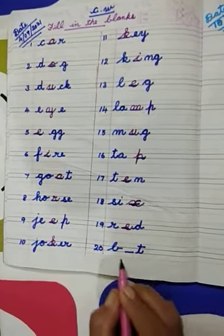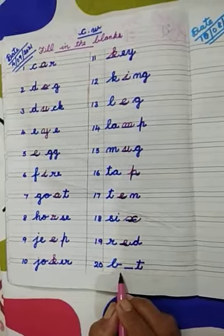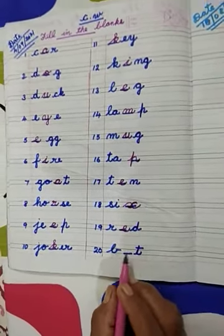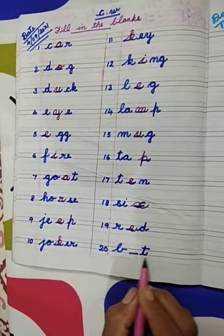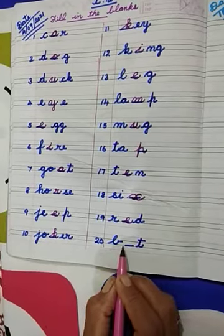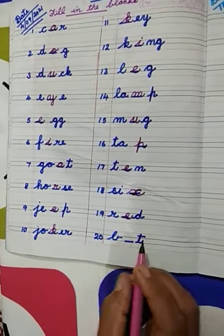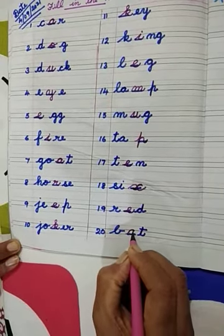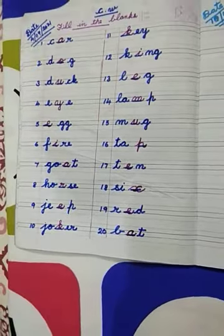B-T. You know which weight is this? Very good. Bat. Spelling of bat: B-A-T. Which letter is missing here? Very good, letter A. You have to write your letter A and complete the weight bat.